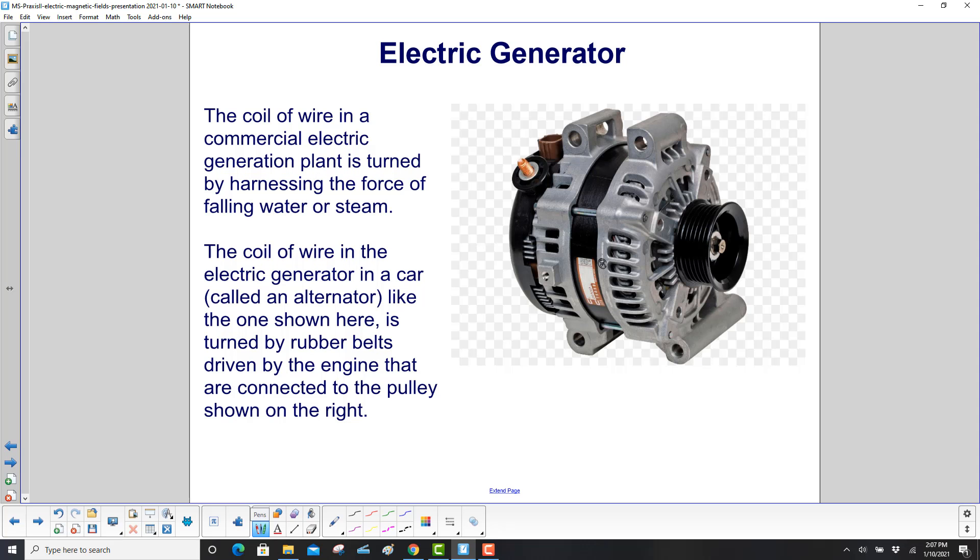The coil of wire in a commercial electric generation plant is turned by harnessing the force of falling water or steam.